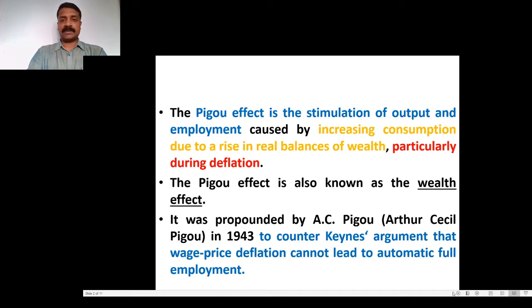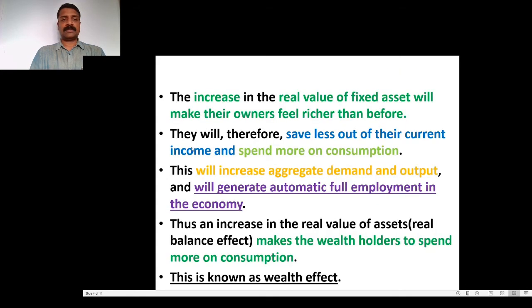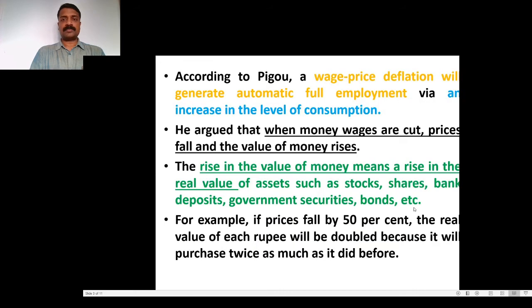The value of money increases, so people believe they are richer than earlier. Pigou argued that wage-price deflation will generate automatic full employment via an increase in the level of consumption.